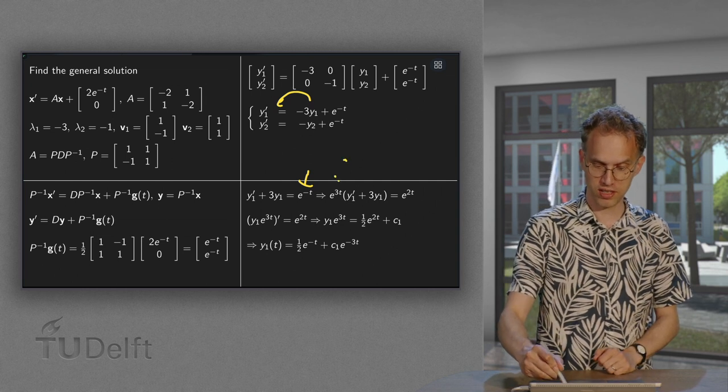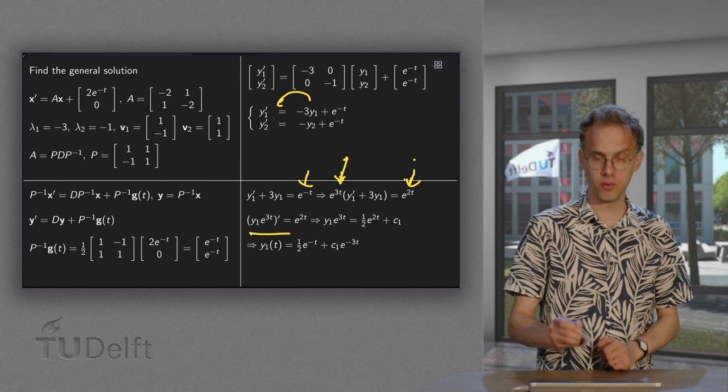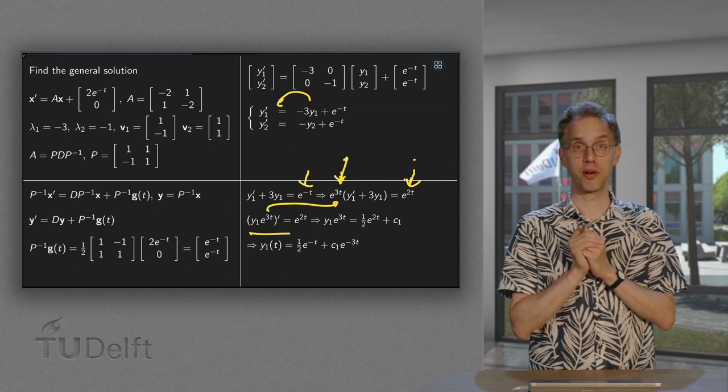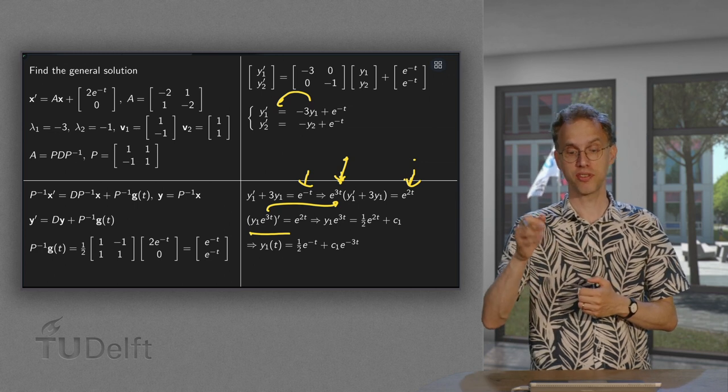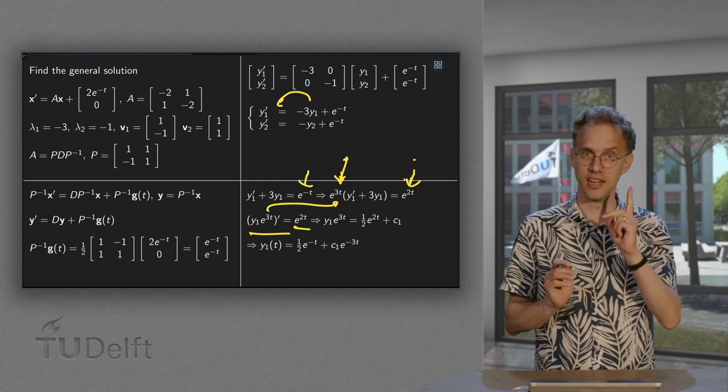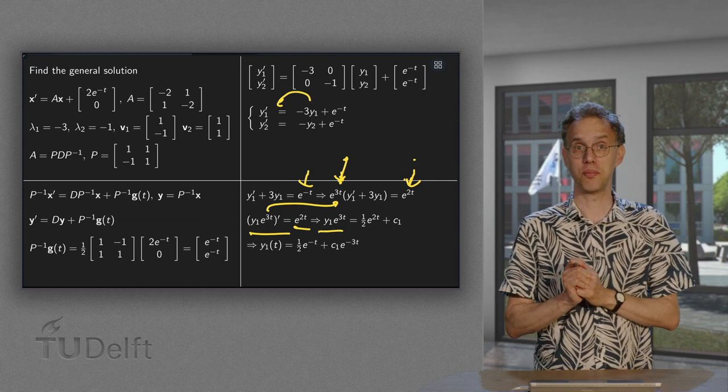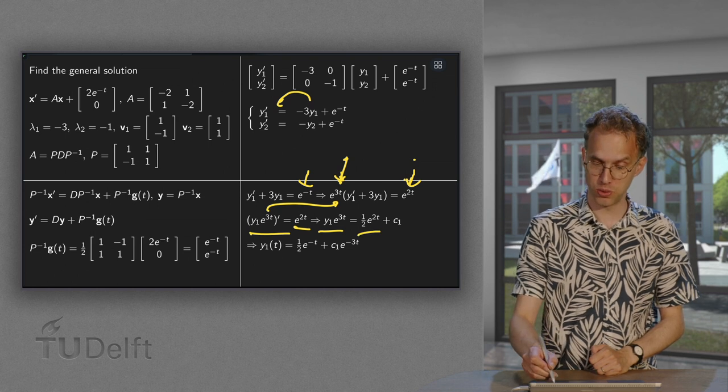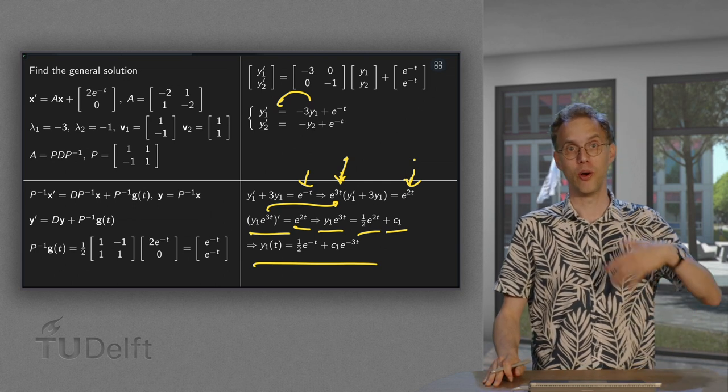So multiply left and right, this is e to the power of 3t. On the right-hand side, we get e to the power of 2t then. And the left-hand side simplifies to y1 e to the power of 3t prime. You can check this by differentiating. If you have y1 times e to the power of 3t prime, if you differentiate, you get y prime times e to the power of 3t plus y1 times 3 times e to the power of 3t, which are indeed the two terms you have over there, equals your e to the power of 2t. Integrate left and right. Here's the tricky part. Integrating the left-hand side is always fine. You just get y1 e to the power of 3t. Integrating the right-hand side can be difficult. Here we are lucky. We just have to integrate e to the power of 2t, which gives us 1 half e to the power of 2t plus some constant. And there we have our y1(t).